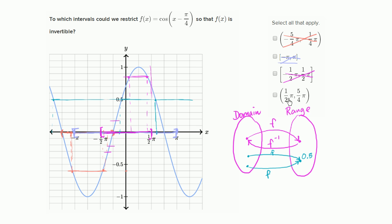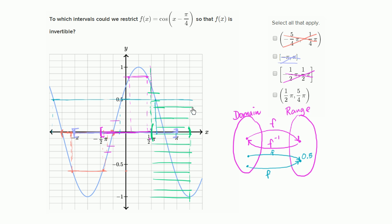I'm left with the last choice, so I'm hoping this one works out. The open interval from π/2 to 5π/4 — that's pi and another quarter, right over there. If I look at the graph here, it seems like it would pass the horizontal line test. At any point, I can draw a horizontal line over that domain and I'm only intersecting the function once. So for every element of the range we're mapping to, there's only one element in our domain mapping to it. It passes the horizontal line test, so I would check this one.